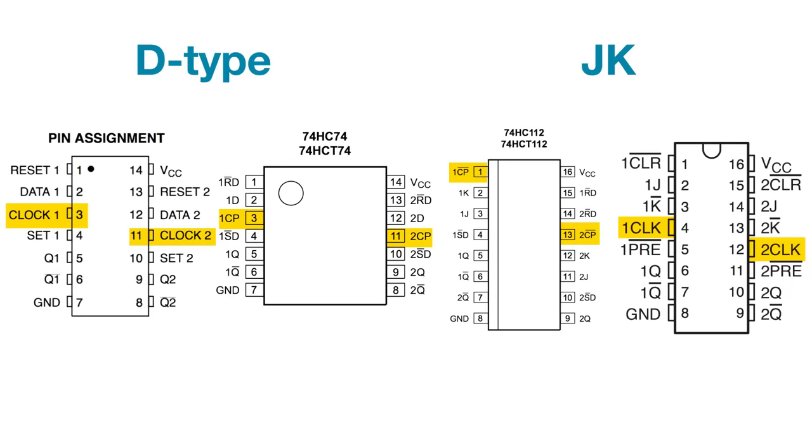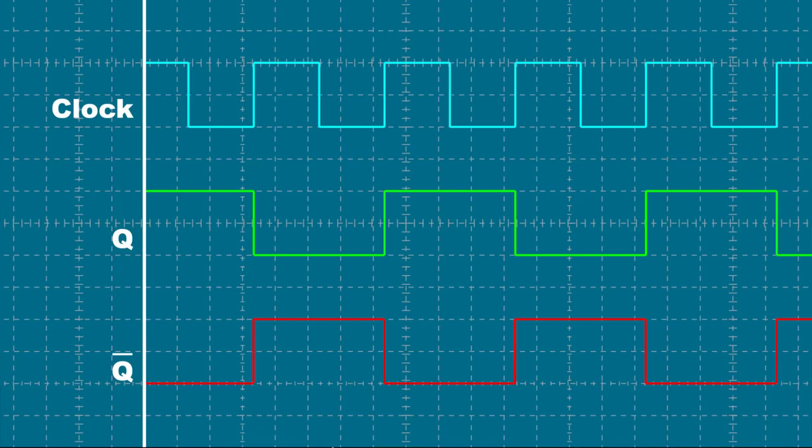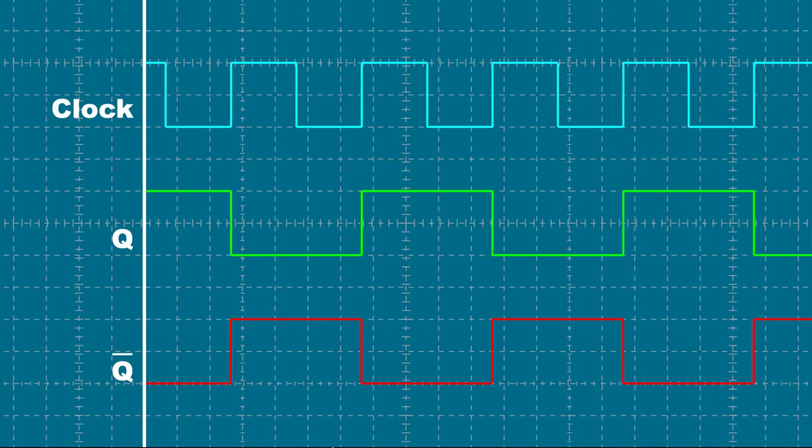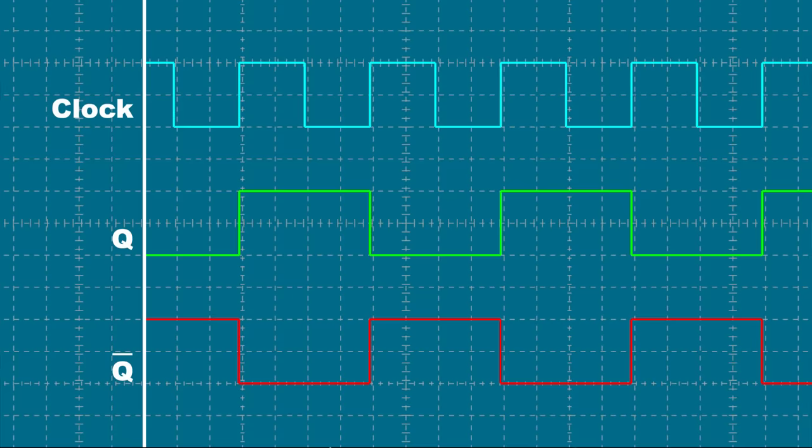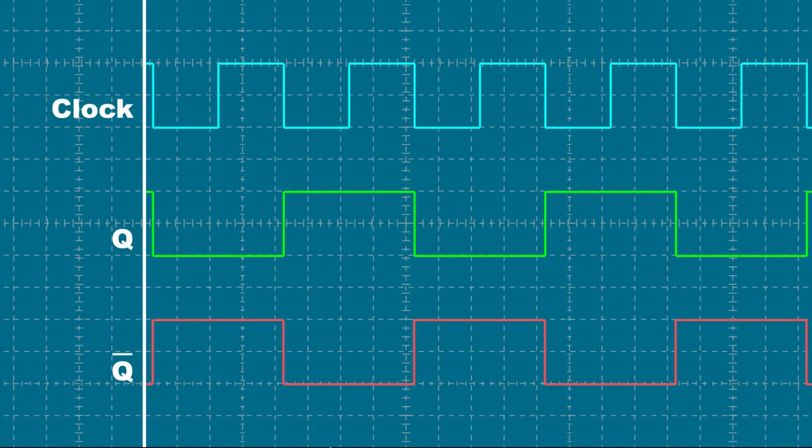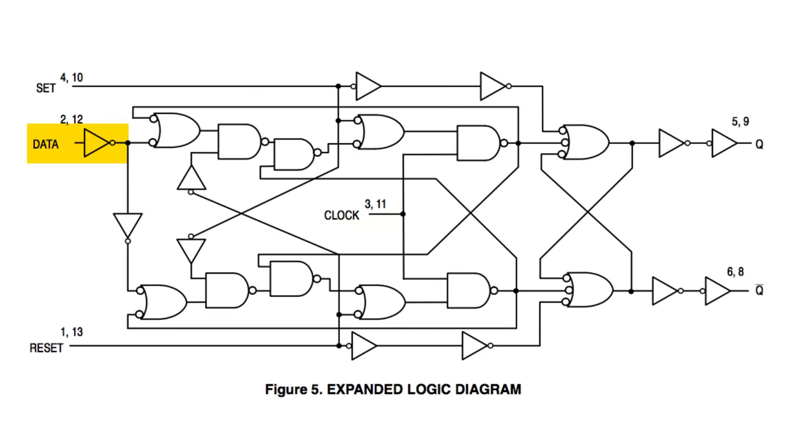By understanding how gated SR latches work, we can begin to understand the two main types of flip-flops, D-type and JK. D-type and JK flip-flops have an additional input pin for a clock signal, usually labeled clock or clock pulse. This pin enables the flip-flop to be triggered according to a clock signal. The outputs flip-flop between high and low with every active clock edge. Active high flip-flops are triggered at the rising or positive edge of a clock pulse. Active low flip-flops are triggered at the falling or negative edge of a clock pulse. You'll also often find a data input. The data pin is an additional input that can be set high or low.